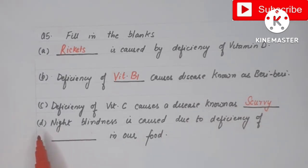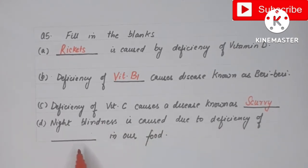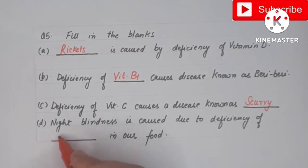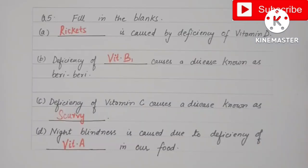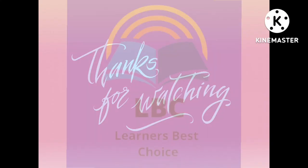The last fill in the blank is: night blindness is caused due to the deficiency of dash in our food — it occurs due to the deficiency of vitamin A. With this we complete the exercise. I hope you understood. If you have any doubts, ask in the comment section. Please like, share, and subscribe to the channel. Thanks for watching, bye!